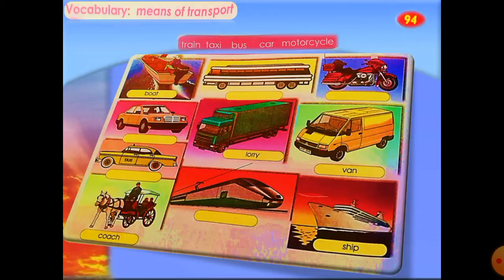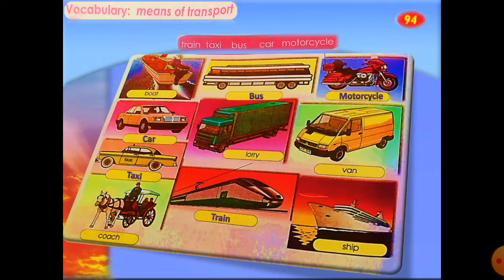On your books, page 94, you have a matching exercise. You can pause the video and do it in your notebooks. So first we have a boat, next it's a bus, next one it's a motorcycle, next one it's a car, next one it's a taxi, and the last one it's a train — maybe it's a bullet train.